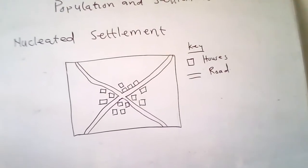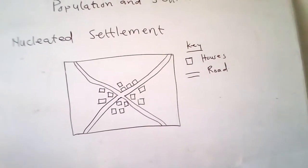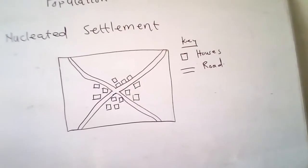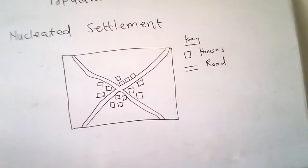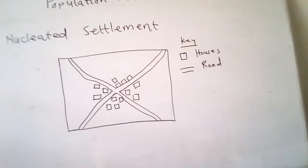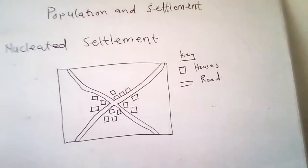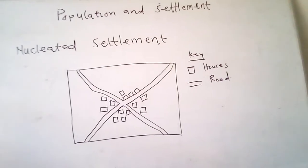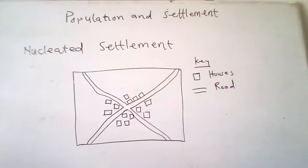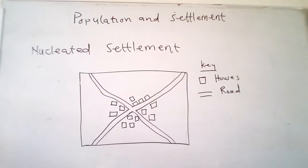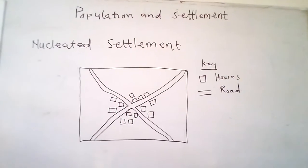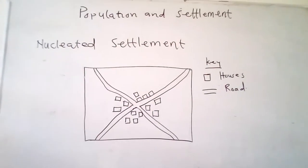Nucleated settlements are settlements where buildings are close together, often clustered around a central point. They often grow around a route junction or a river crossing. The location of a nucleated settlement can be determined by easy access to basic needs such as water supply and markets. On the board, a diagram of nucleated settlement has been drawn — boxes represent houses and lines represent routes.